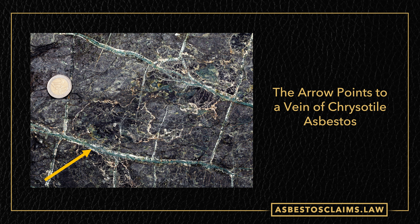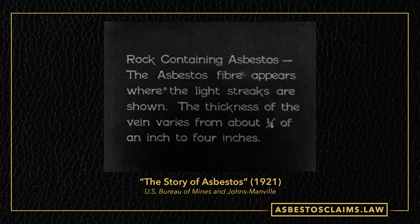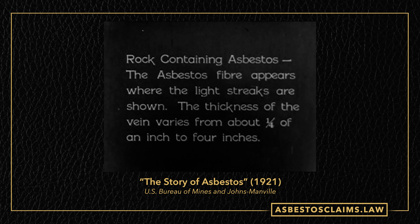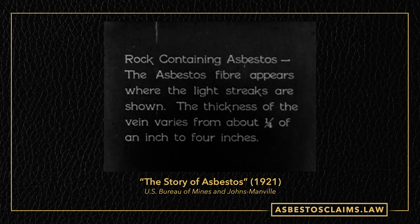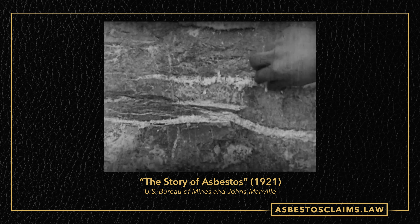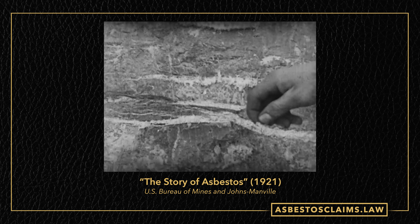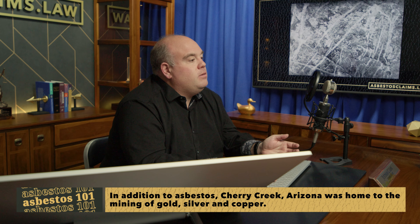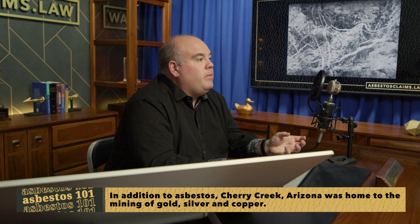This is what a vein of asbestos actually looks like. The arrow is pointing to a vein of chrysotile asbestos — this is a European sample. If you were to walk up to it, you might think: could I pull some of that asbestos out with my bare hands? And the answer is yes, you absolutely could. This is a silent movie about 100 years old, filmed through the U.S. Bureau of Mines and Johns Manville Corporation, the largest asbestos company in the world. The gentleman has walked up to the vein and is literally pulling it apart with his fingers. This vein was found somewhere outside the Phoenix, Arizona area — I believe in Cherry Creek, not too far from my office in Mesa.